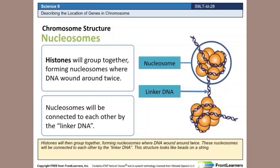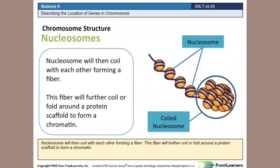These nucleosomes will be connected to each other by the linker DNA. This structure looks like beads on a string. Nucleosomes will then coil with each other forming a fiber, which will further coil or fold around a protein scaffold to form a chromatin.